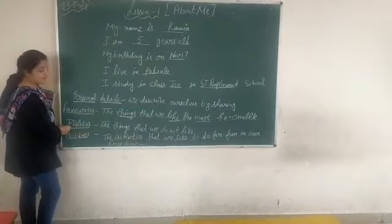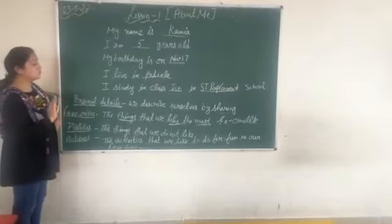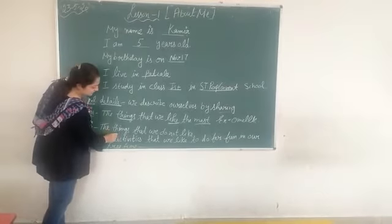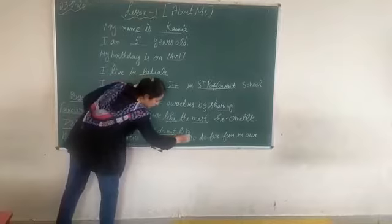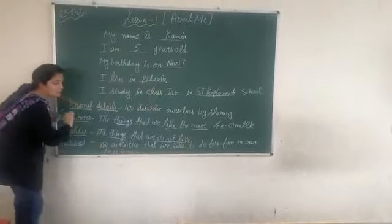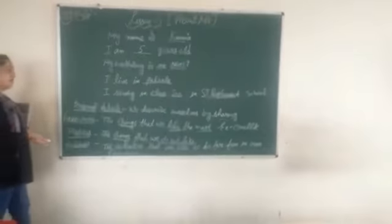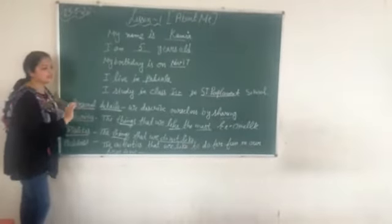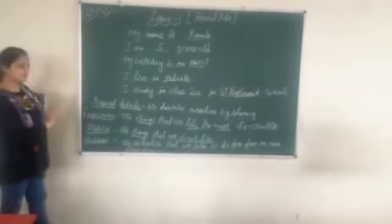The third definition is dislikes. The things that we do not like are called dislikes. And the things we like the most are called likes.